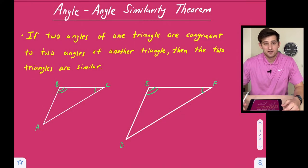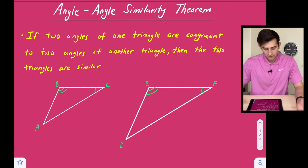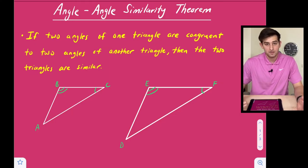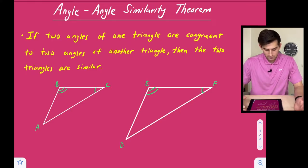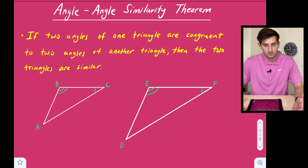Hello everybody. In this video we're going to talk about a theorem in geometry known as the Angle-Angle Similarity Theorem. This theorem has to do with two triangles where two of the angles of the two triangles are congruent to each other. It says: if two angles of one triangle are congruent to two angles of another triangle, then the two triangles are similar.